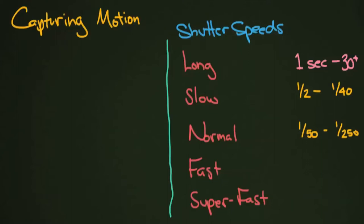I'd run normal shutter speeds up to about one one-hundred-twenty-fifth of a second, though there's some overlap with fast shutter speeds — sometimes one-hundred-twenty-fifth is fast enough depending on the scene. Fast shutter speeds go up to one one-thousandth of a second, which was the upper limit for many cameras for a long time. More recently, camera speeds have increased dramatically, and I call those newer speeds 'super fast' — one one-thousandth and above. Consumer cameras now go past one eight-thousandth of a second, which is pretty amazing.